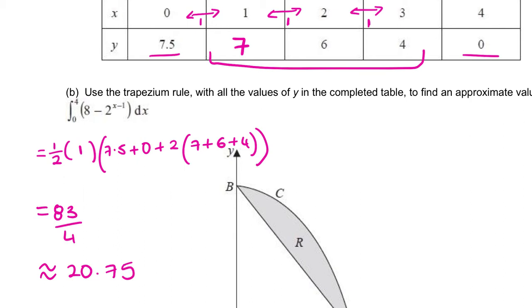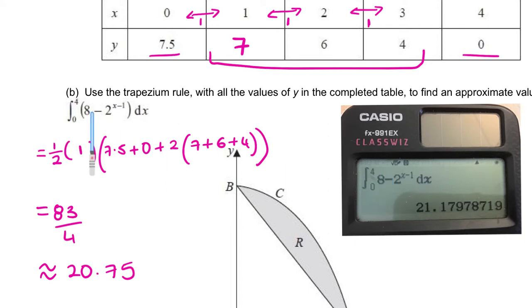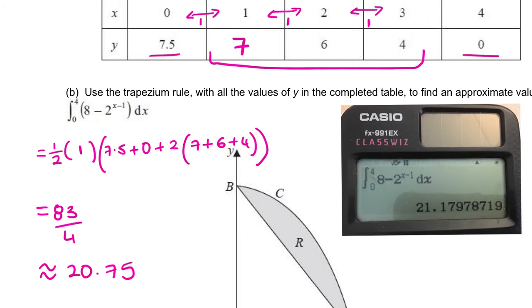Now I'm going to double check this in my calculator. I can substitute this in using the integration button — 8 minus 2 to the power of (x minus 1). I can see I get 21.17, and we got 20.75 — that's pretty close, so we know we're roughly right. If this was 100 and something and you got 20, that would not be right. How we could get this more accurate is if we were to use more strips — the more strips we use, the more accurate we'll get.